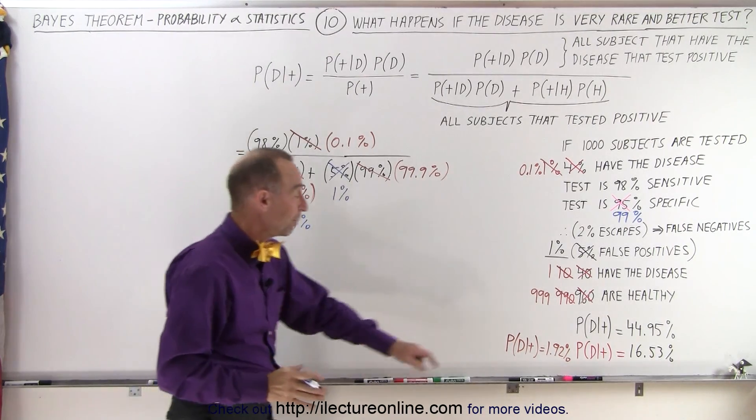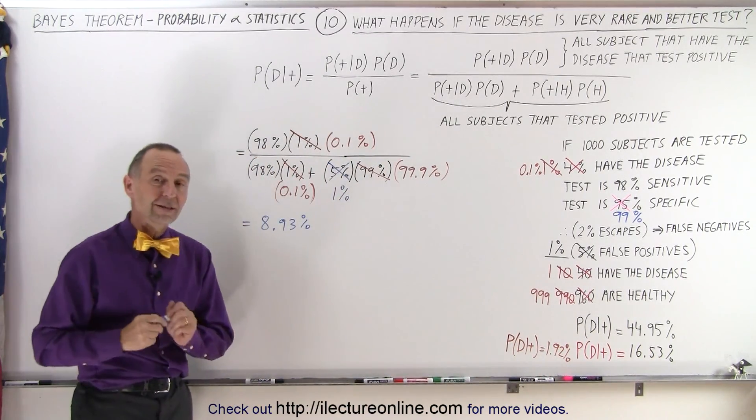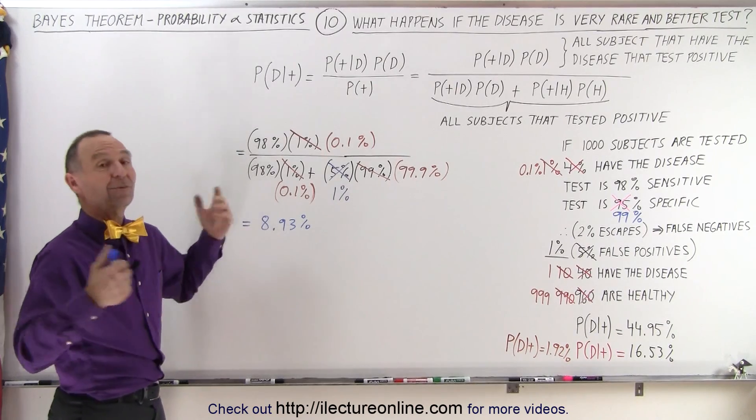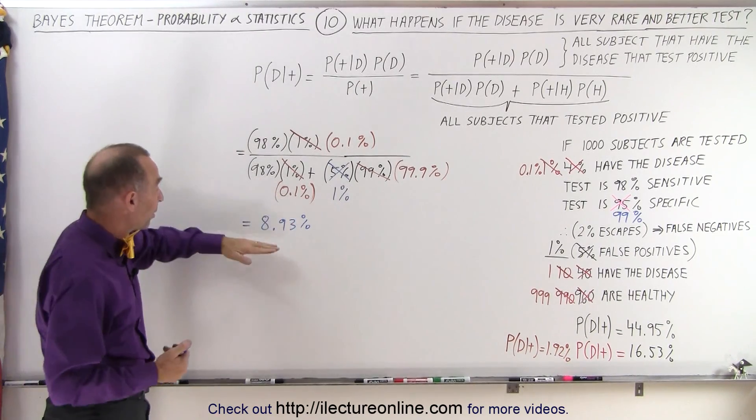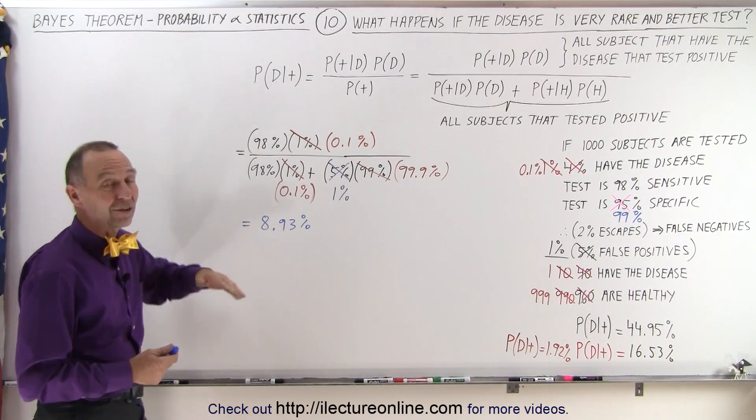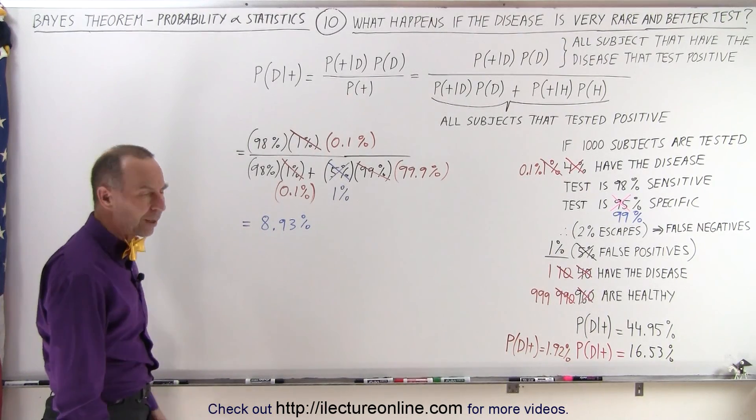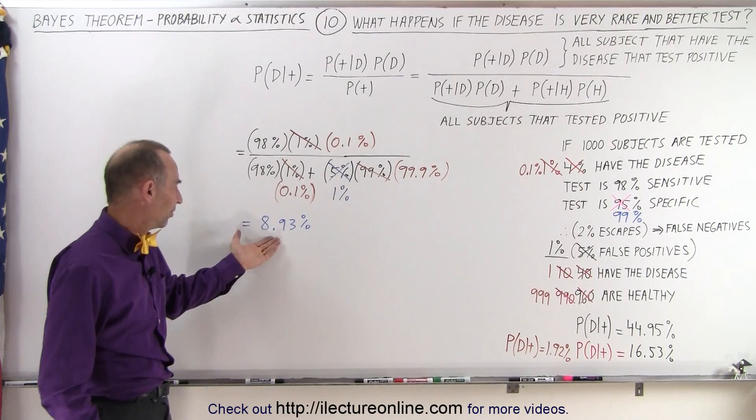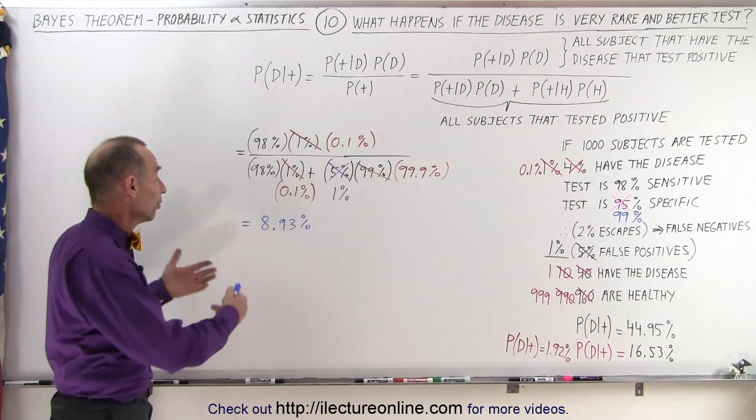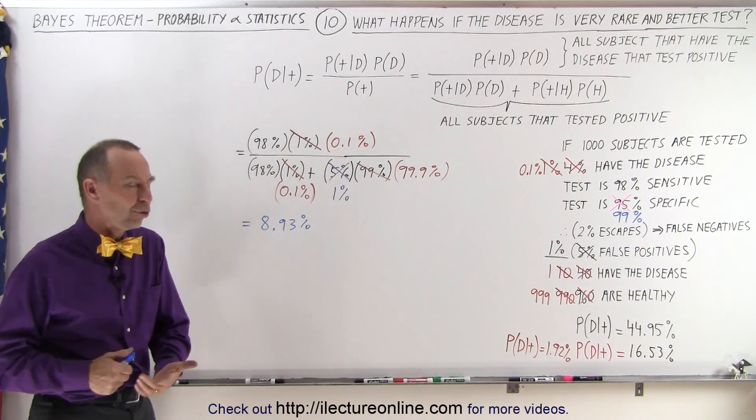A big improvement over the 1.92, but still not stellar. If I was getting a test done for a rare condition and the test comes out positive, the doctor would say, well you have about 9 percent chance that you actually have the condition we're testing for. That's not very good. That's almost not significant, is it? What can we do so that we're sure that I have the condition or sure that we don't have the condition?